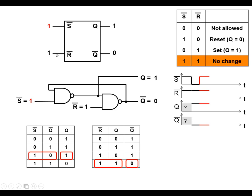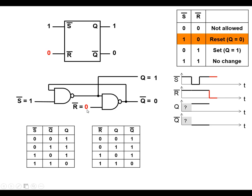What happens when we change the reset input and make that low? When this is low, going into this first NAND gate, we've got a 0 and a 1. Whenever one of the inputs is low, the output is going to be high — so Q-bar is going to be high. When this feeds back, we've got a 1 and a 1 going into the NAND gate and the output is going to go low, which means Q goes low.